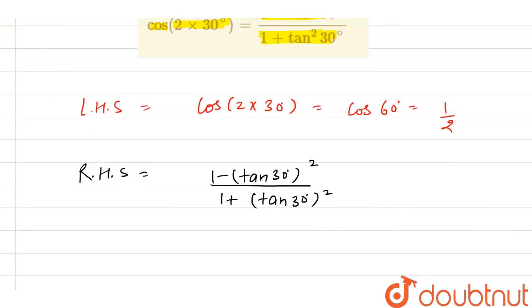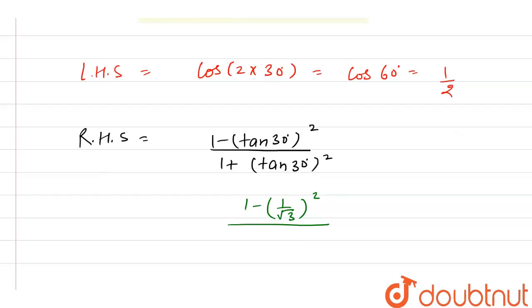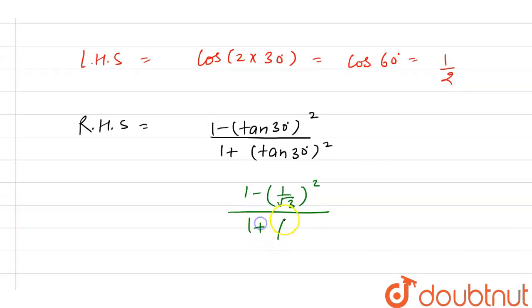Now, we know that tan(30°) equals 1/√3. So it's 1 minus (1/√3)² divided by 1 plus (1/√3)².